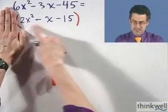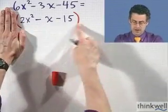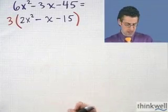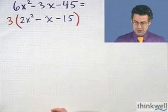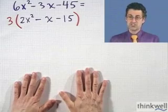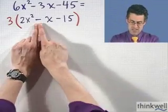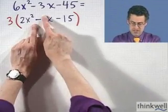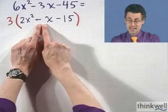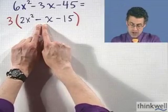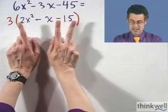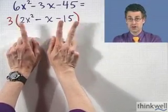Now my goal is to take this inside thing in the red and try to factor it. How do I do that systematically? Well, what I have to do is find two numbers whose sum is b, which is in this case negative 1, and yet whose product is a times c, which you'll notice is negative 30.